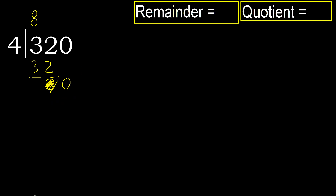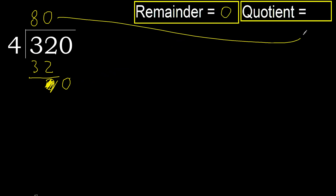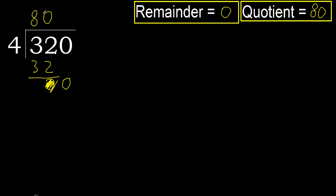Since there is no more number, we complete it with 0. Always complete with 0 here, because we finish with this number. So 320 divided by 4 is 80.